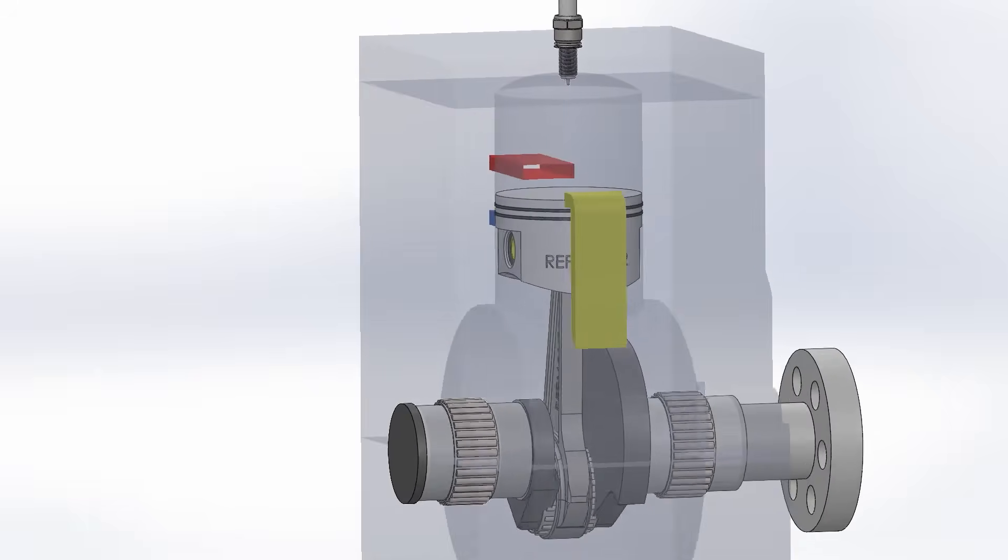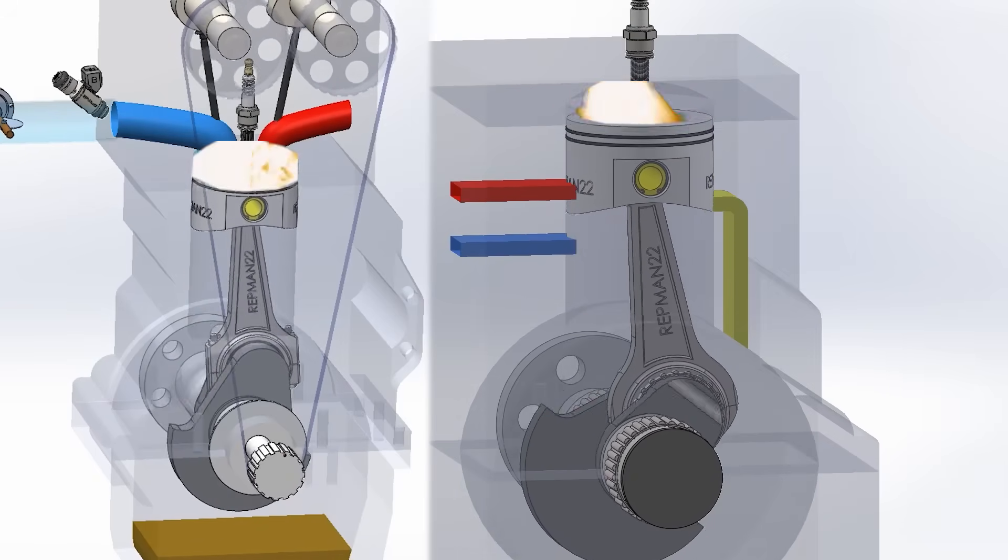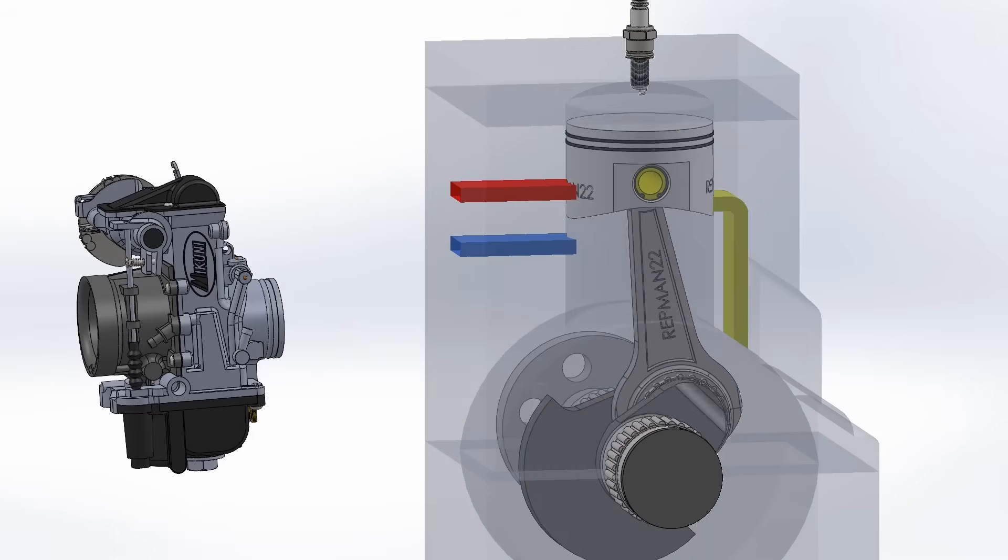Unlike a normal four-stroke, the two-stroke performs several tasks at the same time, burning fuel in each revolution of the crankshaft, while the four-stroke does it every two revolutions. This means that the two-stroke has double the theoretical performance. Let's look at this process in detail.